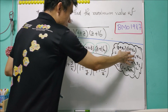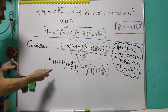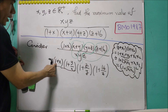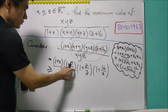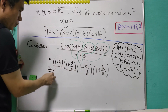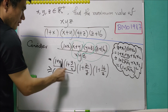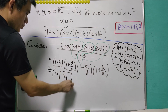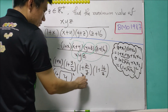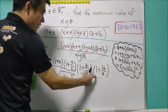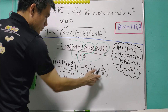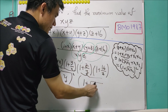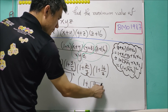Now we apply this to our expression. For the first two terms, (1+X)(1+Y/X) ≥ (1 + √(X · Y/X))² = (1 + √Y)². For the third and fourth terms, (1+Z/Y)(1+16/Z) ≥ (1 + √(Z/Y · 16/Z))² = (1 + √(16/Y))².